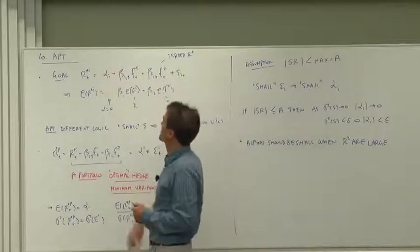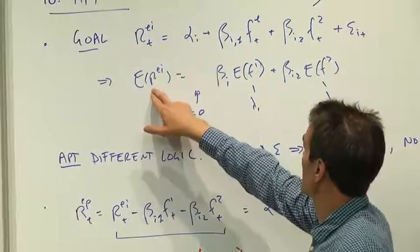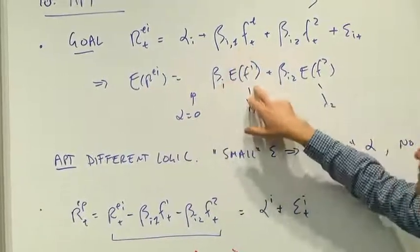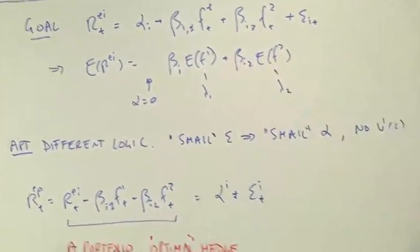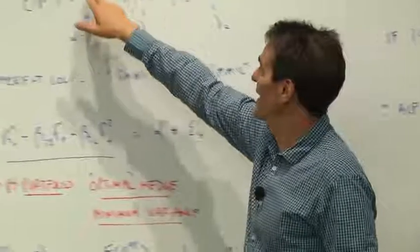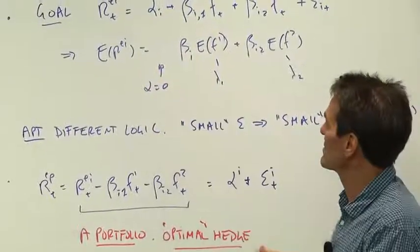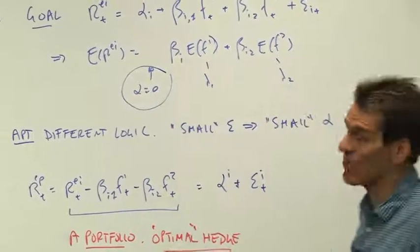If we take the average value of such a regression, we get expected return is beta times expected factor one, beta two times expected factor two. We would normally get an alpha there, but our goal is to find some logic that the alpha should be zero.